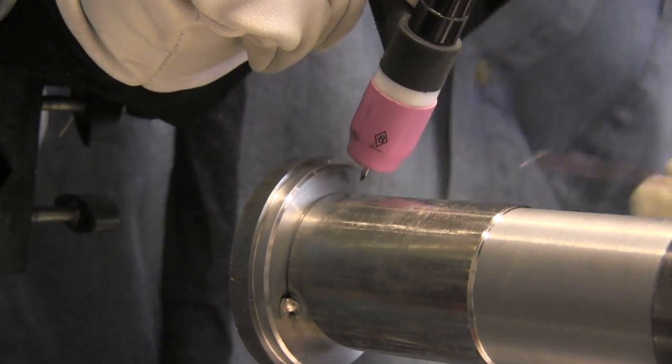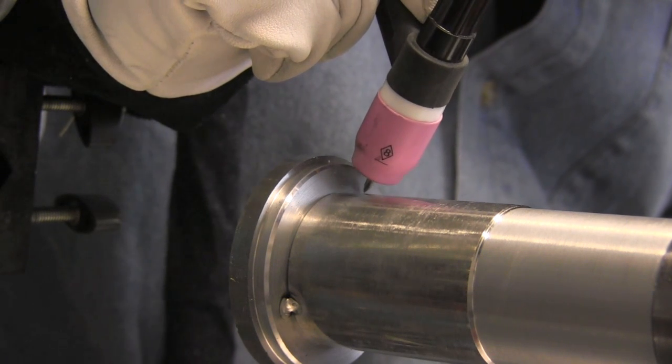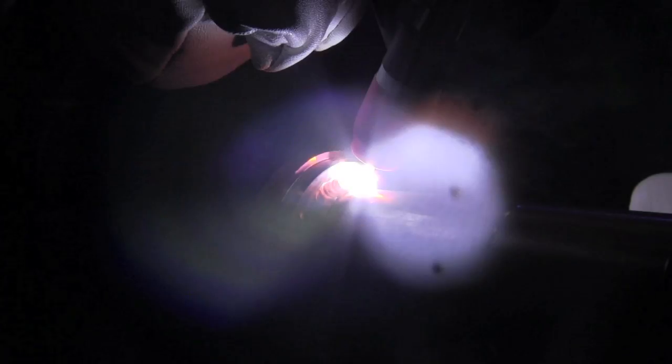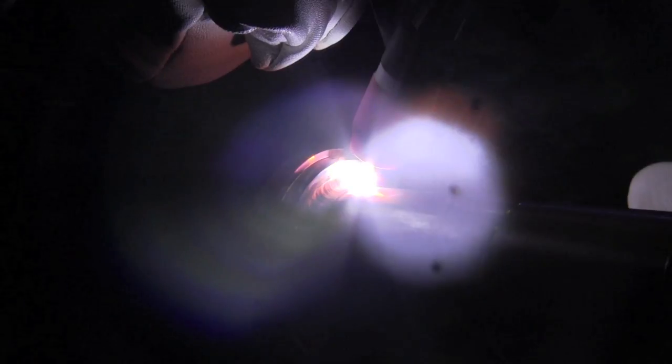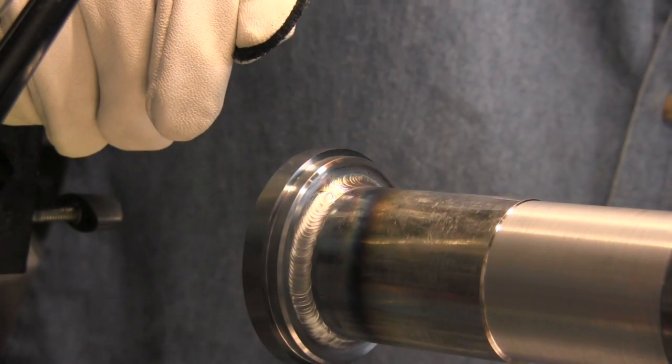Now in this particular shot I am using a TIG inverter with a number eight gas lens cup. I do that a lot for steel. I use a number eight or number seven and I'm playing around with pulse settings. That's something you can do with inverters. This is one pulse per second and with that big eight gas lens cup you get nice color on that thing.